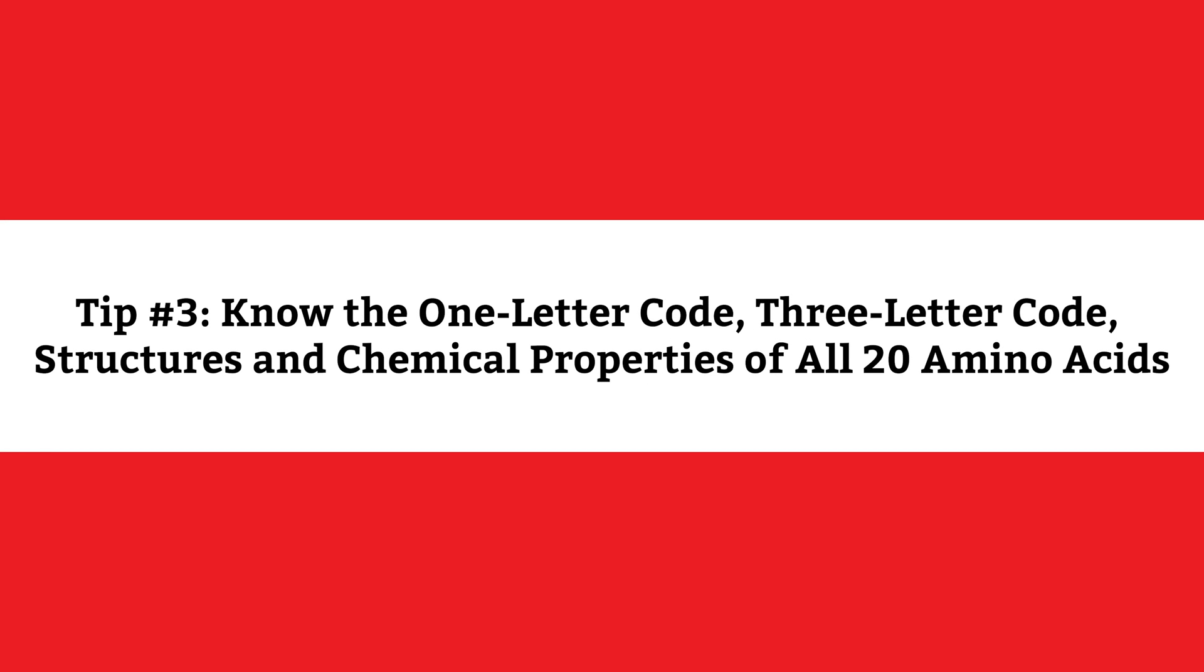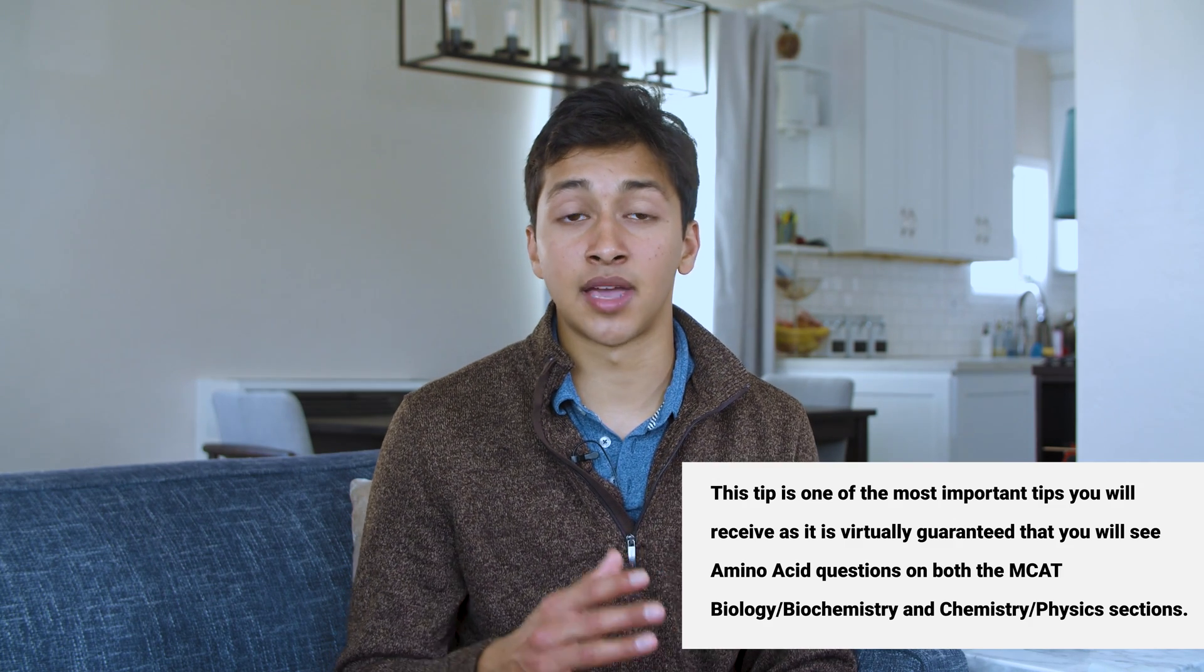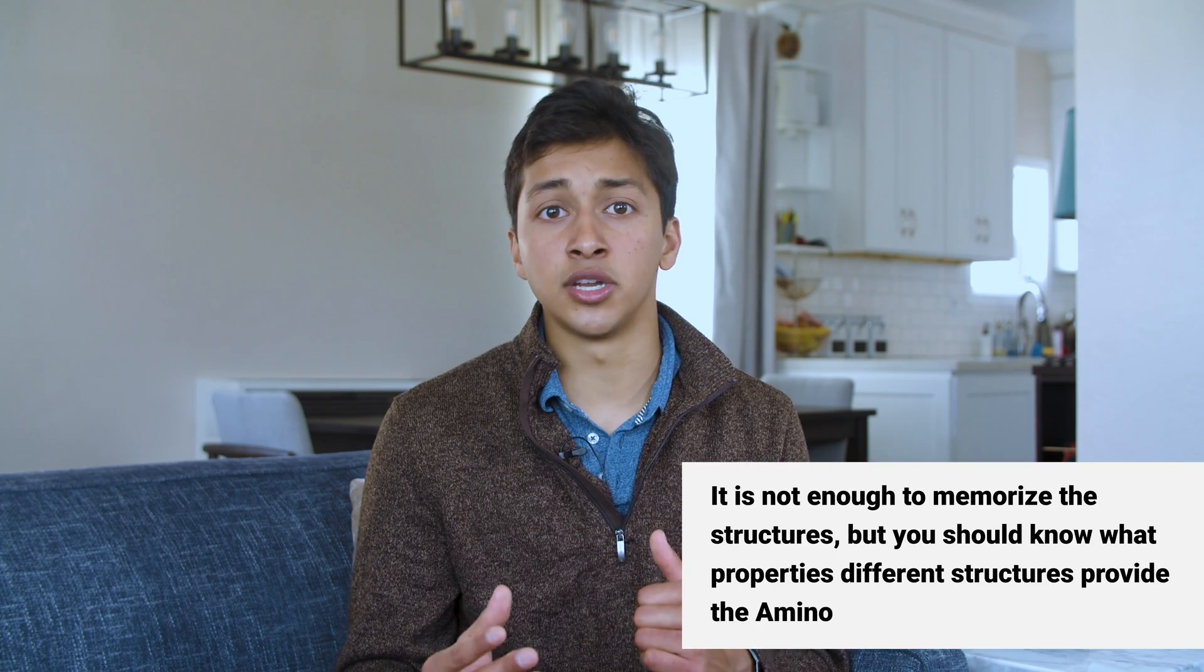MCAT Biology Biochemistry Tip Number Three. Know the one letter code, three letter code, structures, and chemical properties of all 20 amino acids. This tip is one of the most important tips you will receive, as it is virtually guaranteed that you will see amino acid questions on both the MCAT Biology Biochemistry and Chemistry Physics sections. It is not enough to memorize the structures, but you should know what properties different structures provide the amino acids.